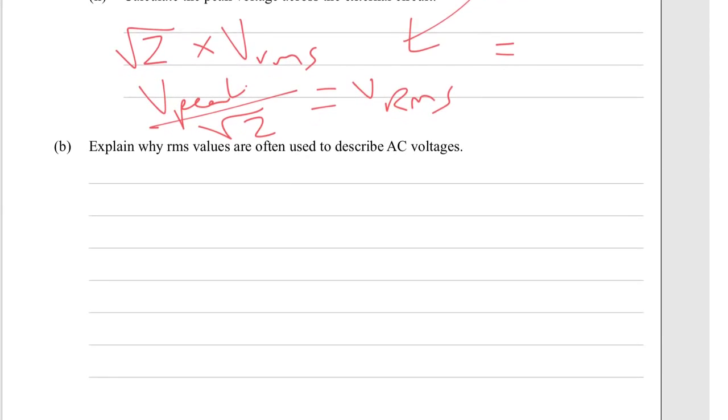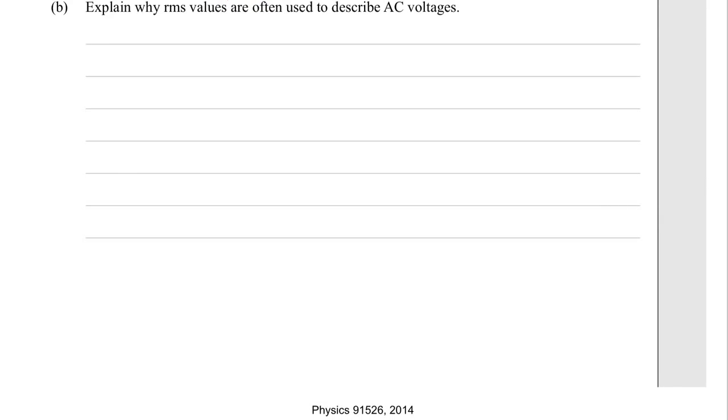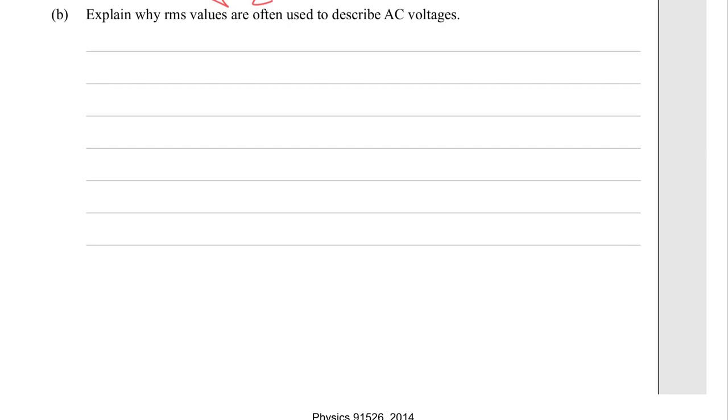we explain why RMS values are often used to describe AC voltages. Because it's a changing voltage, it's easier often, especially with power calculations, to work with a steady average value. We say average like this, because it's a different type of average. If we took the strict average, it would be zero,